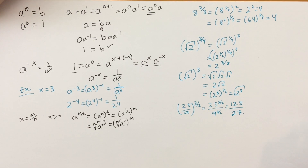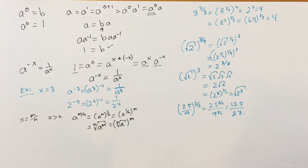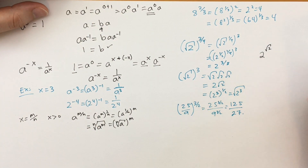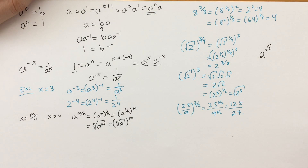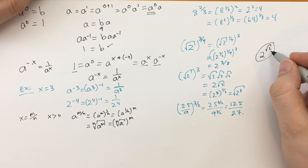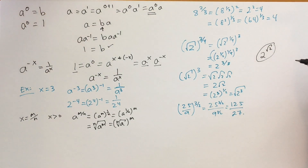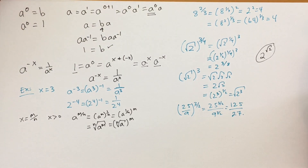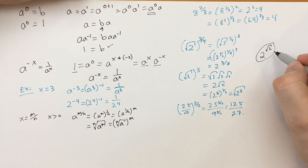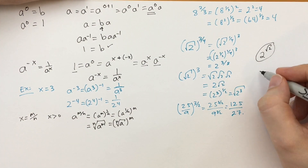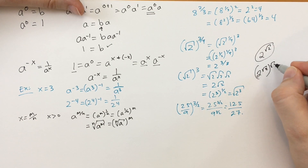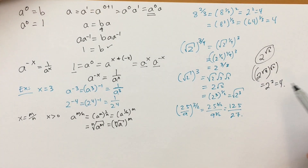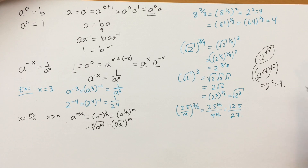A side note: what about irrational exponents, like 2 to the square root of 2? We can use irrational numbers as exponents, and there is a way to make it work, but it's not easy and not part of this course. Interestingly, 2 to the square root of 2 to the square root of 2 equals 2 to the 2, which is 4. Something interesting to explore on your own.